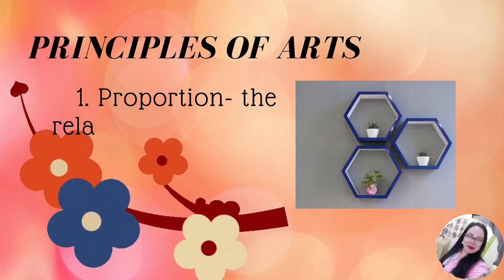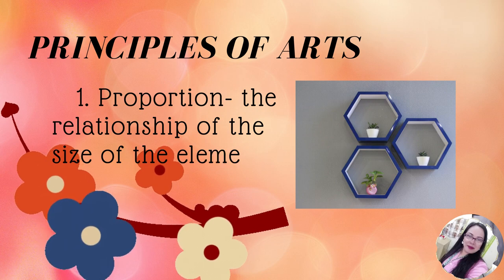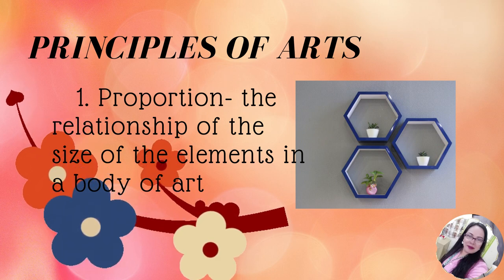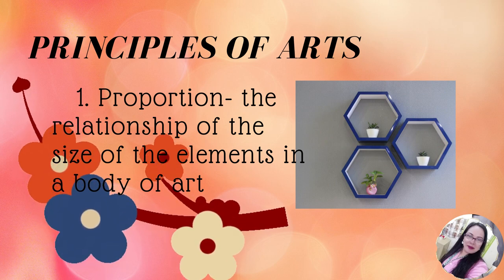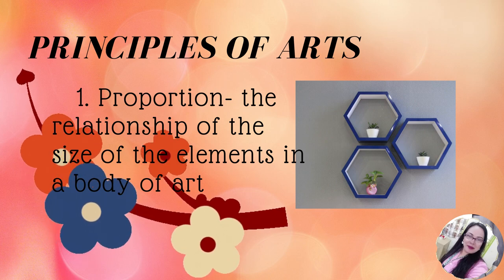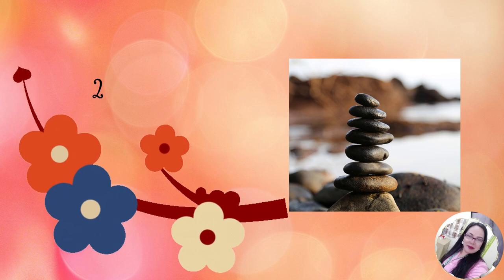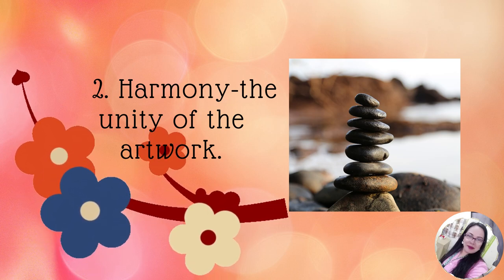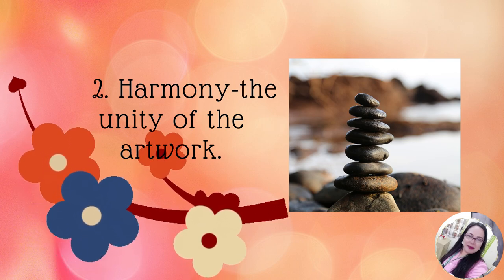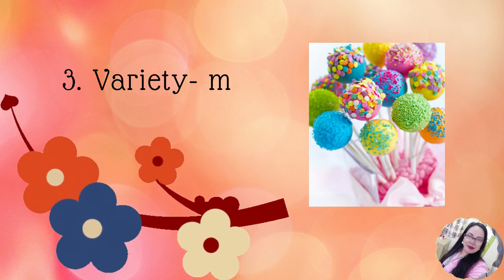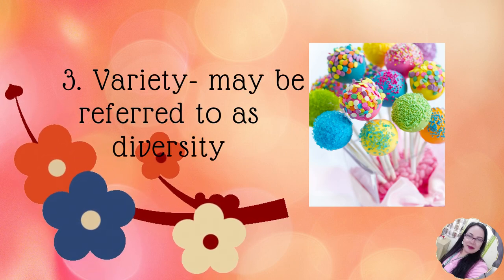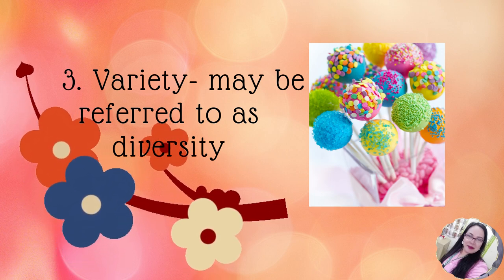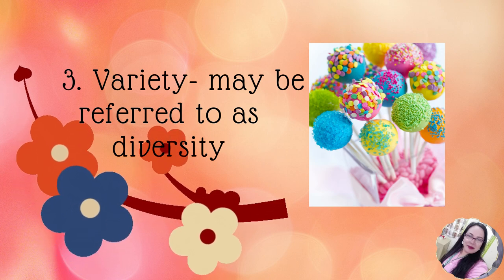In the principles of art, number one is proportion. Proportion refers to the relationship of the size of elements in a body of art. For example, when drawing a human standing beside a house, it is important to ensure that the size of the human is proportional to the size of the house. Number two is harmony. In visual arts, harmony is the unity of the artwork — specifically about the arrangement of related elements. Number three is variety, which may also be referred to as diversity. This means adding multiple different elements to break the monotony of an artwork and make it more interesting.